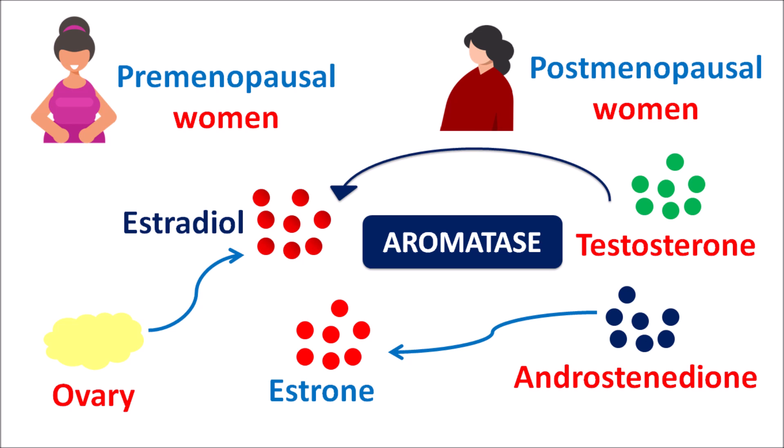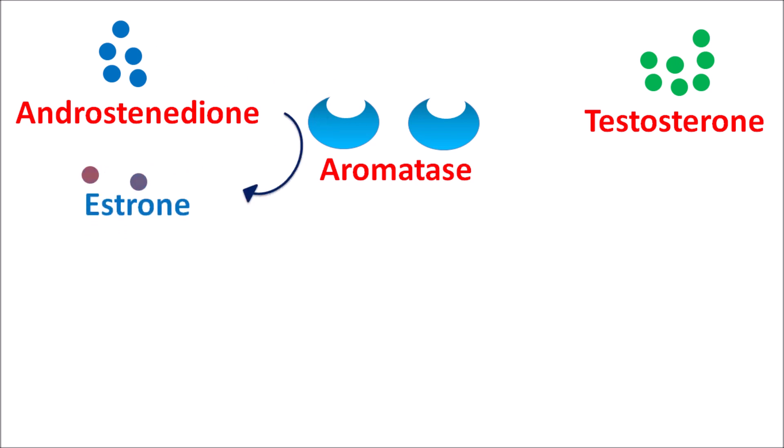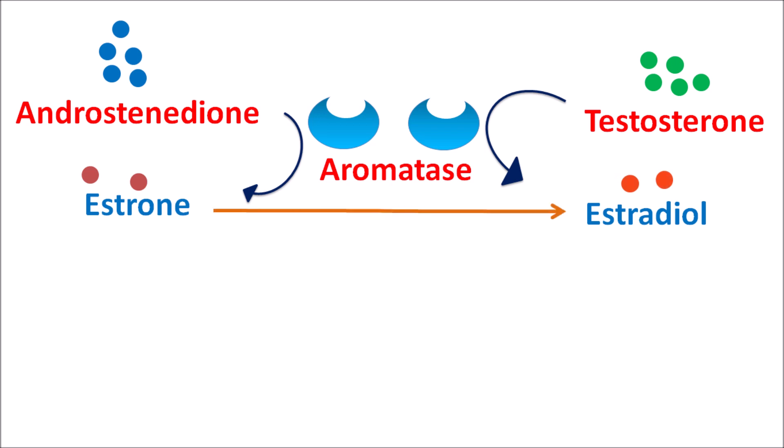Testosterone can be converted into estradiol, and androstenedione can be converted into estrone. Both of these conversions are mediated by the enzyme aromatase. Exemestane blocks this enzyme, thereby inhibiting the synthesis of estrogens from androgens. This synthesis takes place in peripheral tissues, where aromatase activity increases circulating estrogen levels in postmenopausal women.